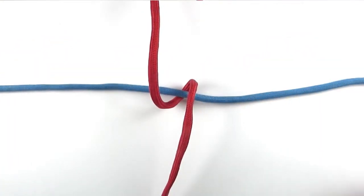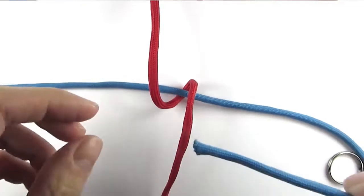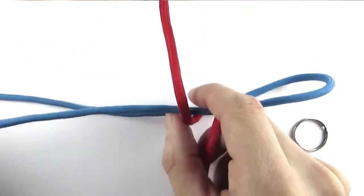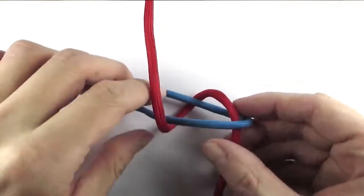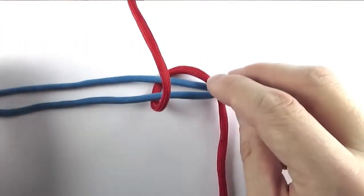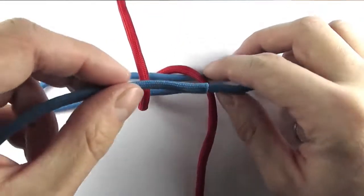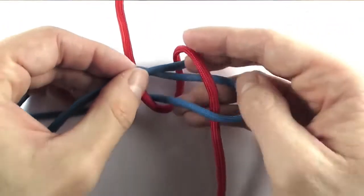Then we're going to weave the other cord through over under with one end, and then with the other end as well, going again over and then under like this.